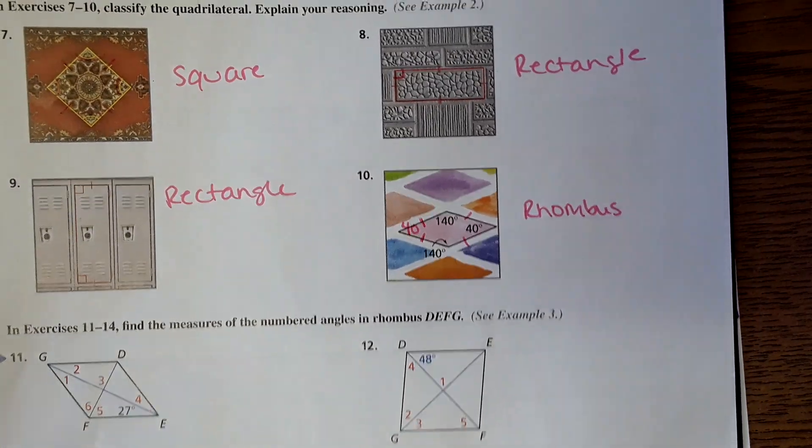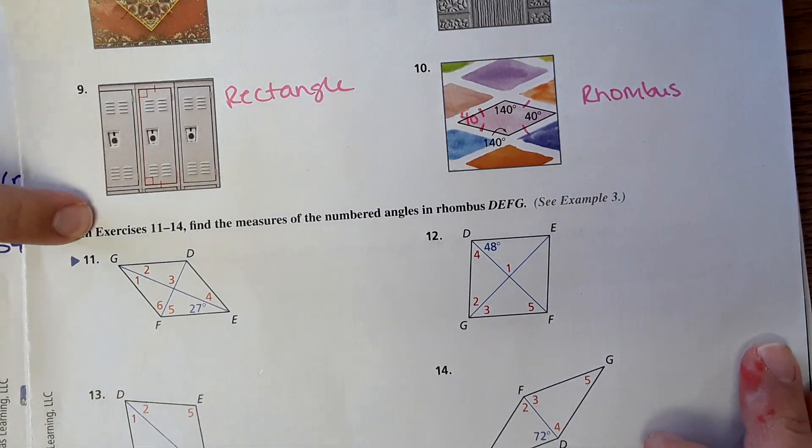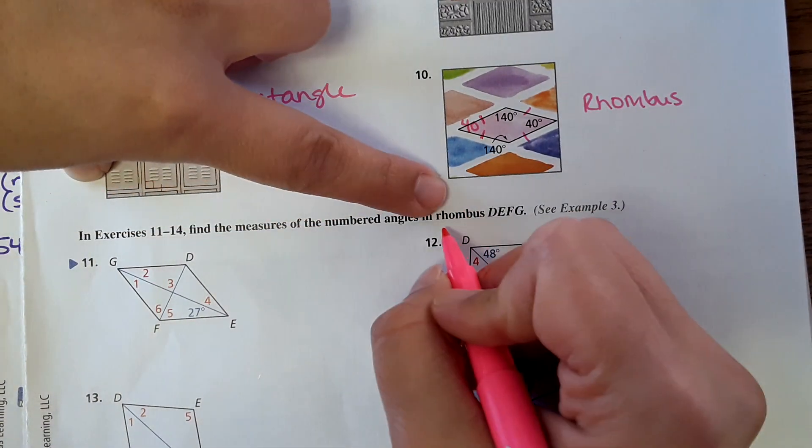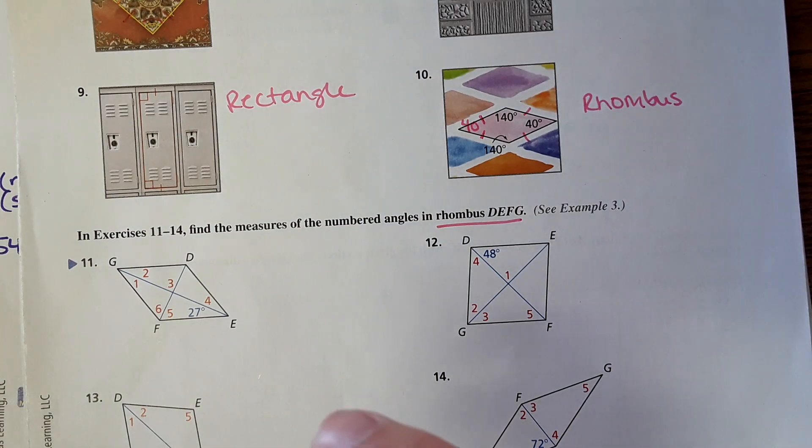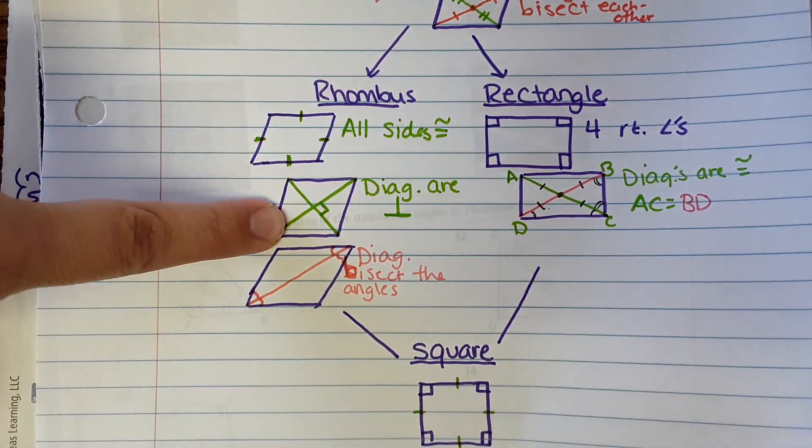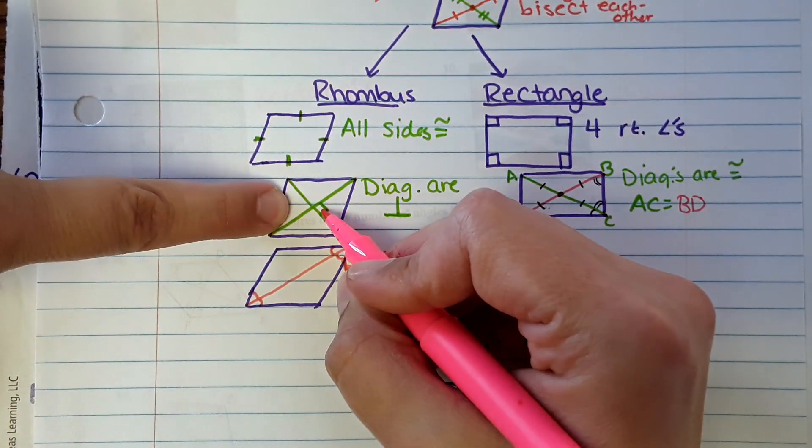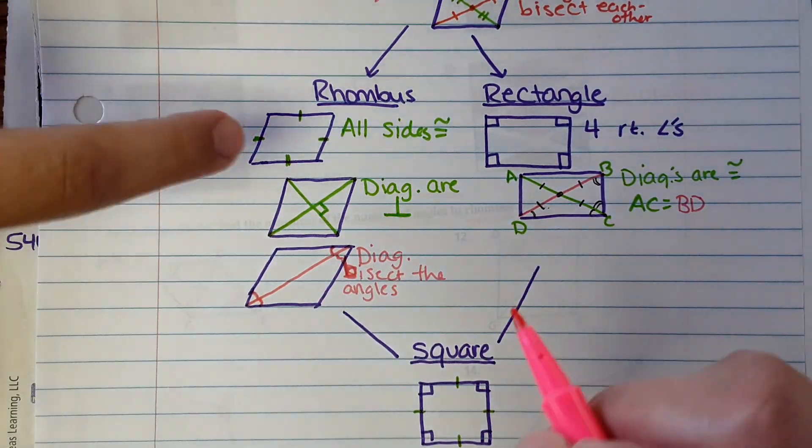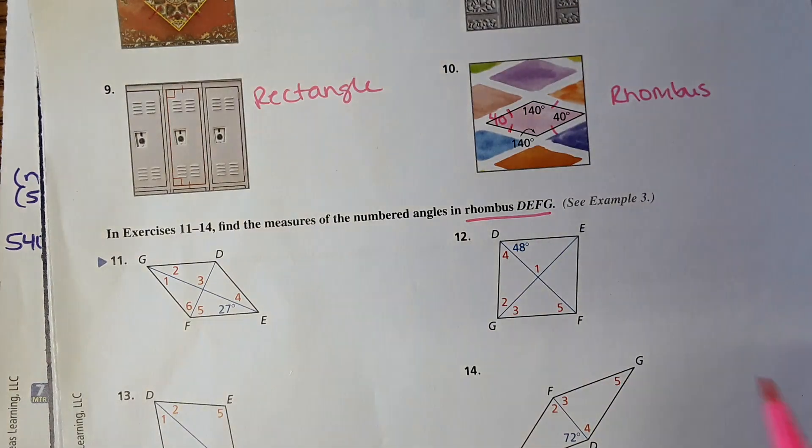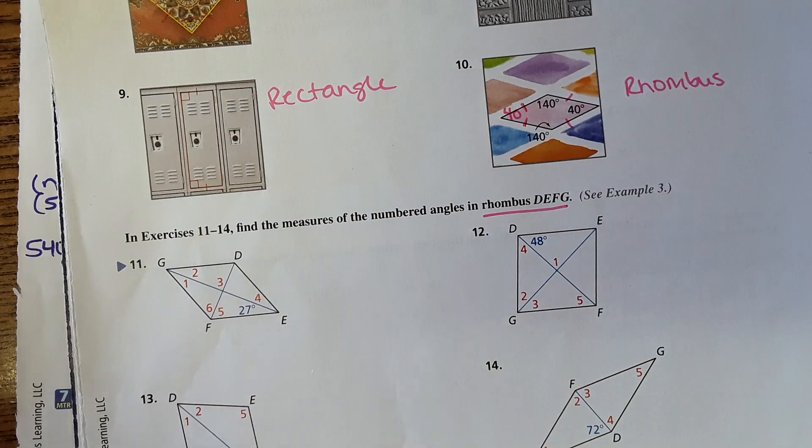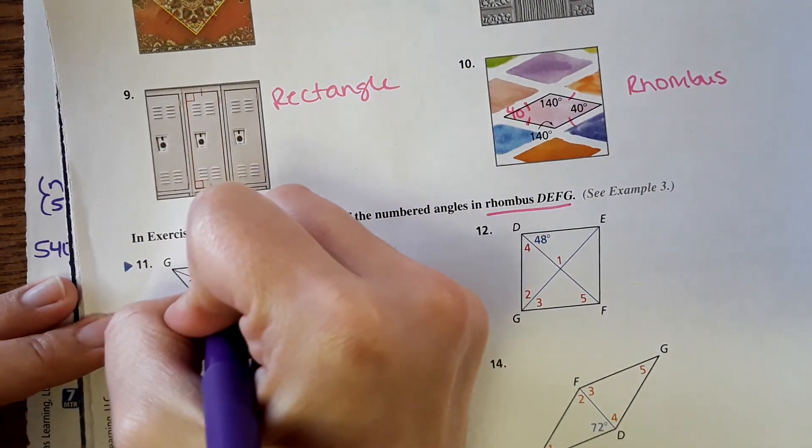And then now we're going to bring in the math with the angle measures. It's saying that in exercise 11 through 14, find the measures of the numbered angles of the rhombus. Remember all the sides are equal in length for rhombus. The diagonals are perpendicular. So where they intersect is going to be a 90 degree angle. And then the diagonals bisect the angle. So if it's a rhombus, then 3 has to be 90 degrees.